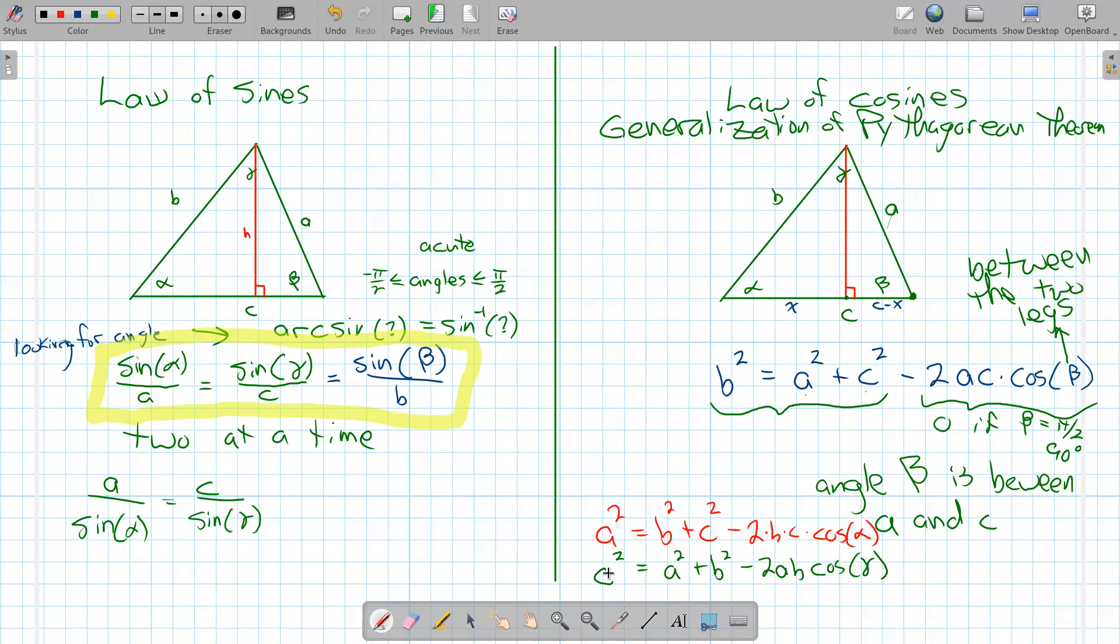So we're generalizing the Pythagorean theorem to apply to any triangle at all, right or not. It still applies to right triangles, but now it applies to any triangle with this special adjustment here. And that's the law of cosines.